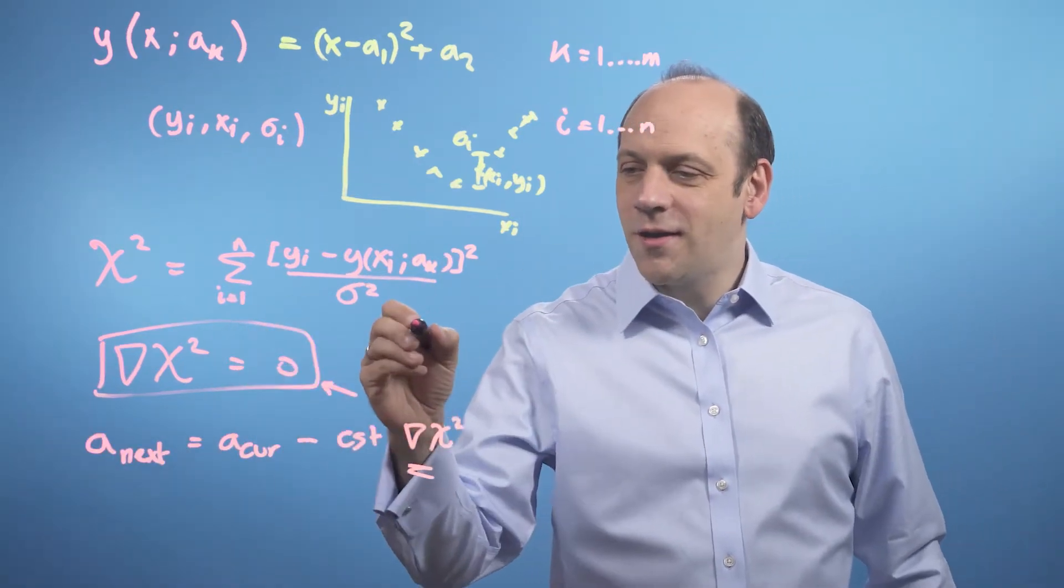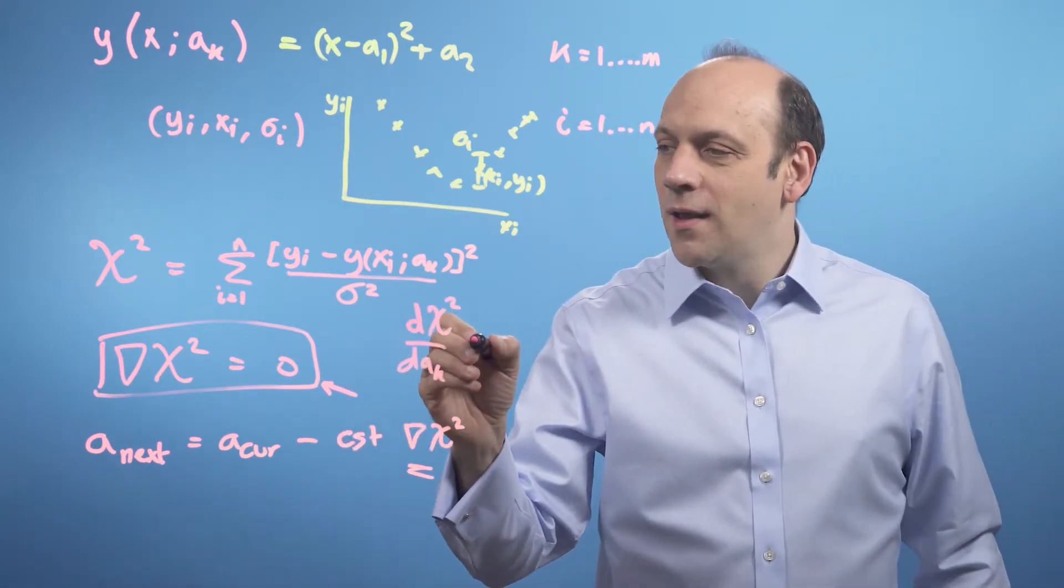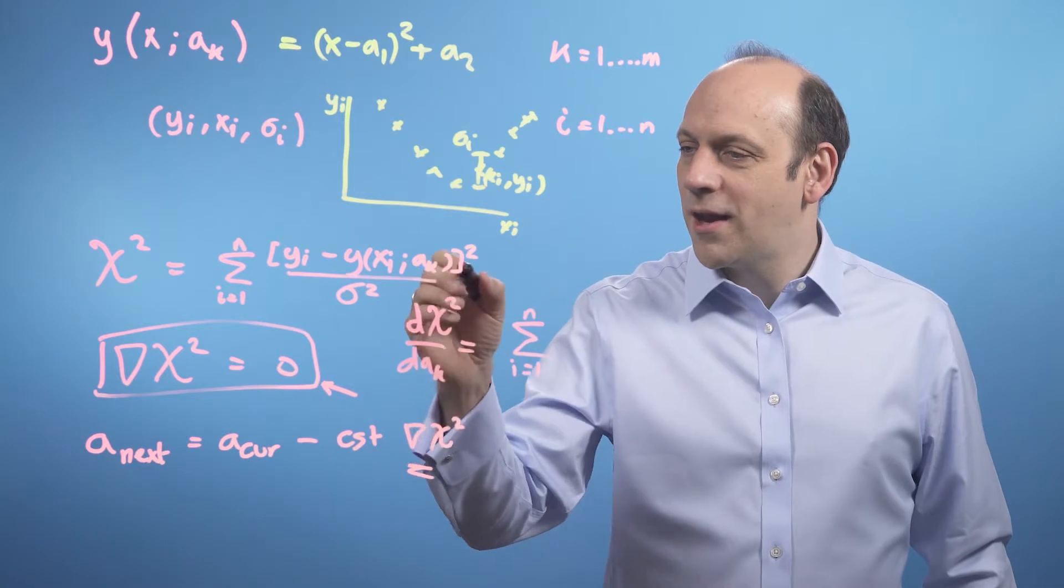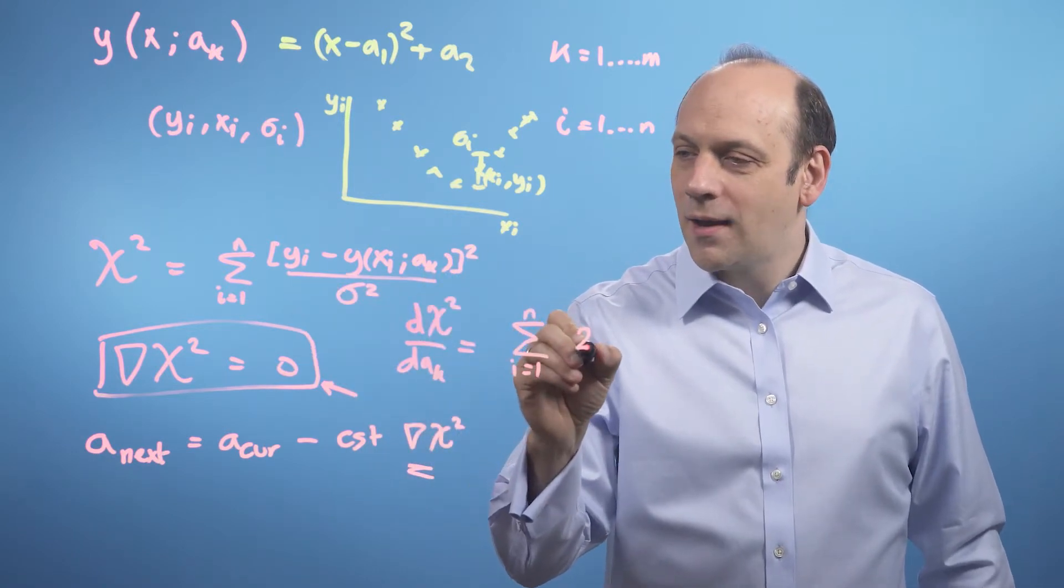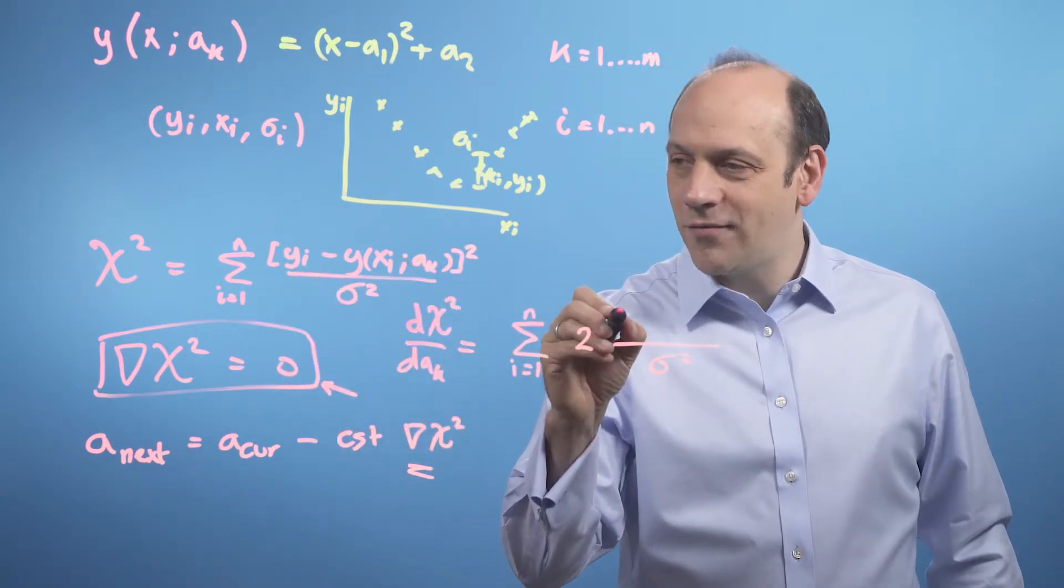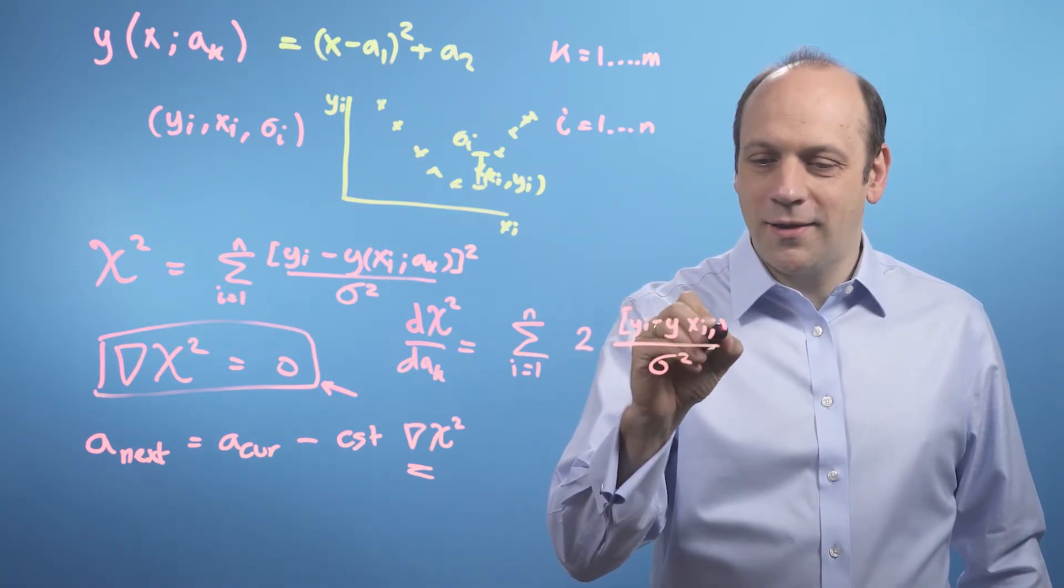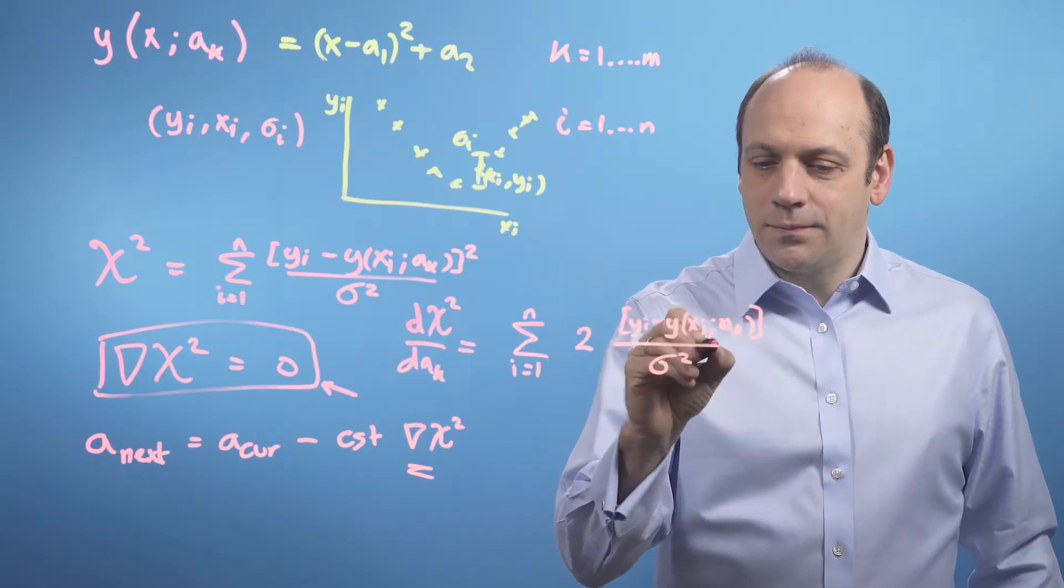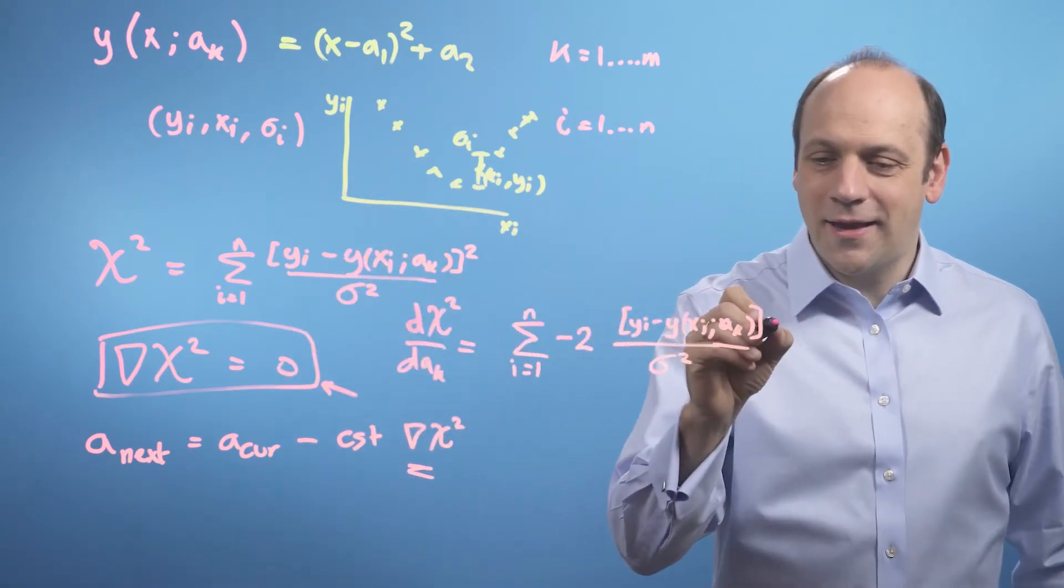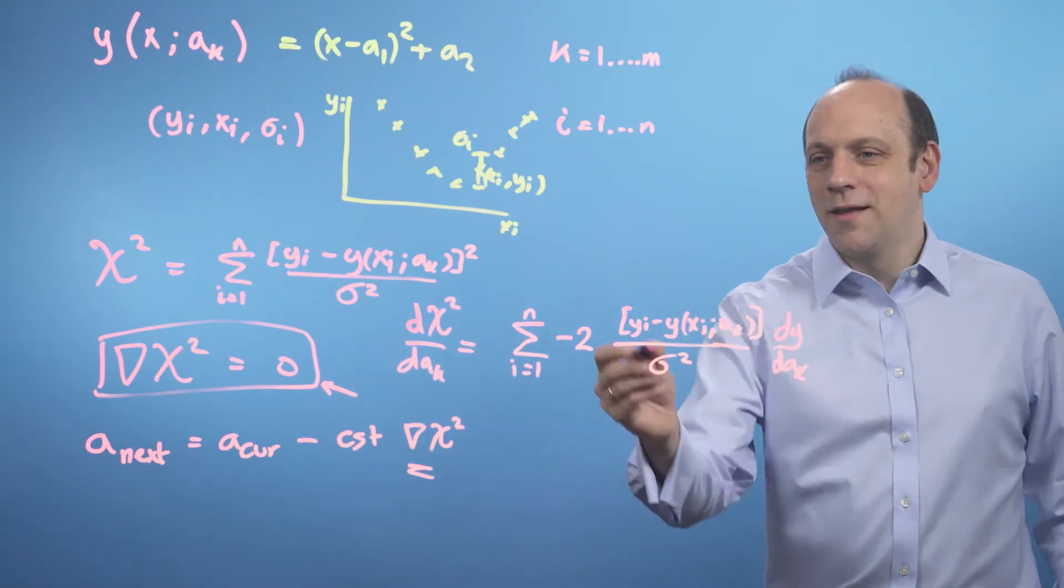So to do this grad, I've got to differentiate chi squared. So I've got to do d chi squared by d a_k for each of the k's in turn. And when I do that, well, the sum has nothing to do with k because it's to do with i. And I'm going to get a two down and the sigma squared has nothing to do with k. When I differentiate this, I'll get the two down. And then I'll have the bracket itself, yi minus y of xi and the a_k's. And then I'm going to get the differential of the bracket. I get a minus sign out of that and I get dy d a_k. So that's going to be my differential there.